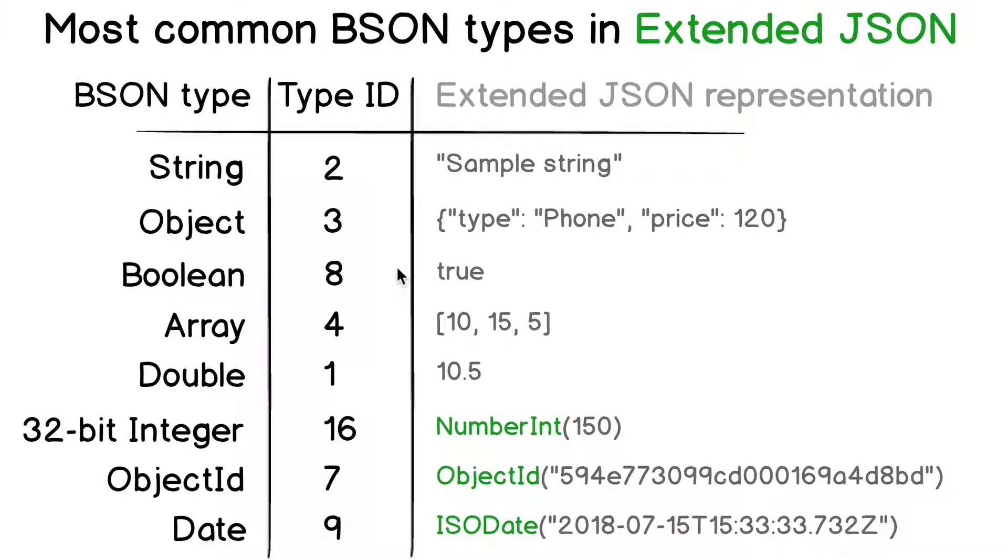Let's now look at the most common BSON types and examples of their representation in Extended JSON format. In this table, the first column shows the BSON type name, the second column has the BSON type ID, and in the third you see examples of the Extended JSON representation of each value type.